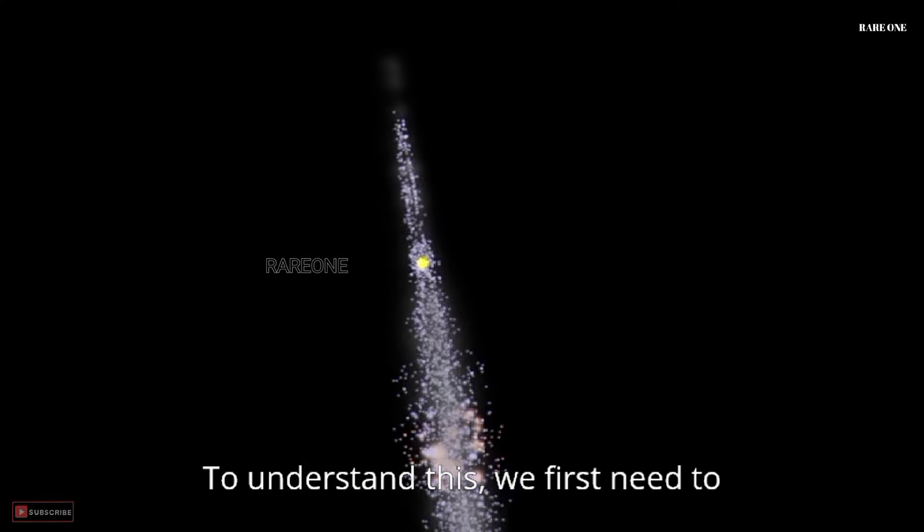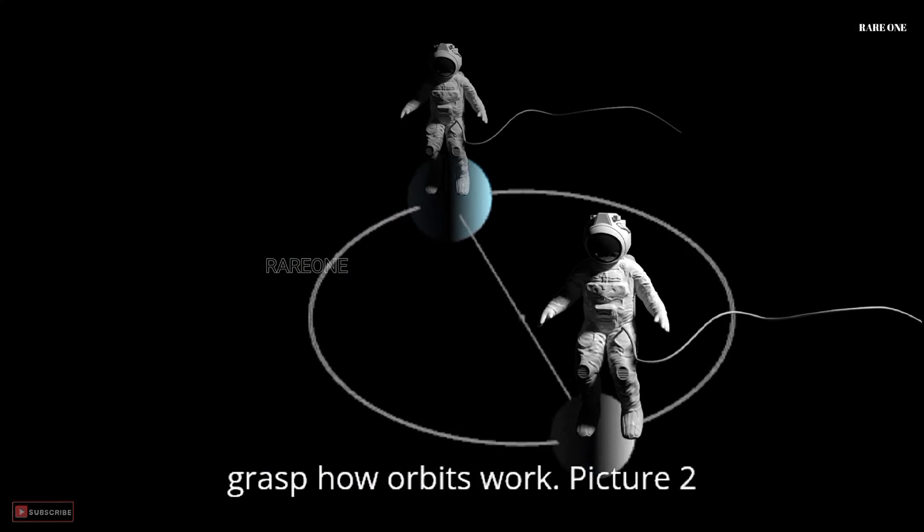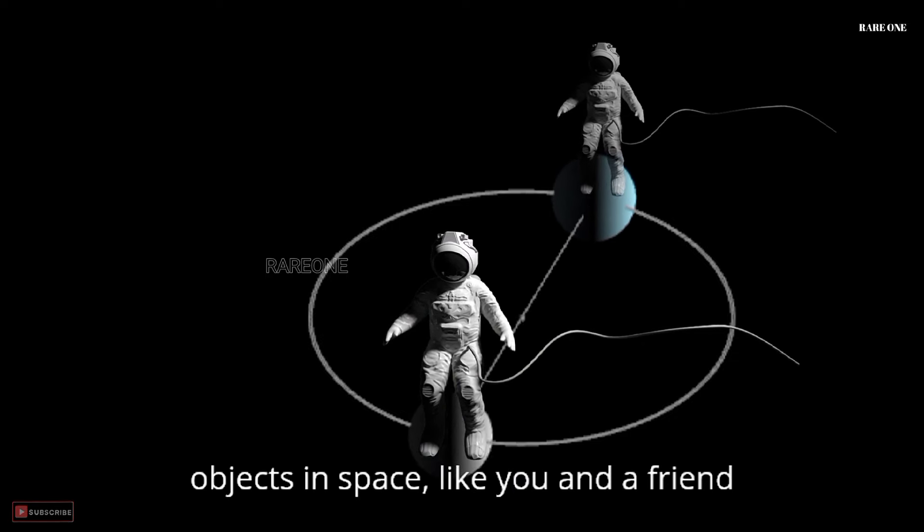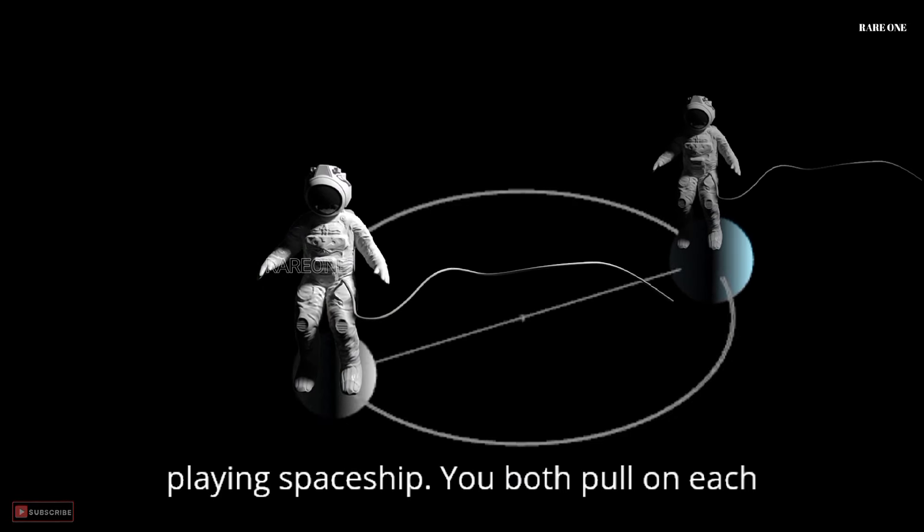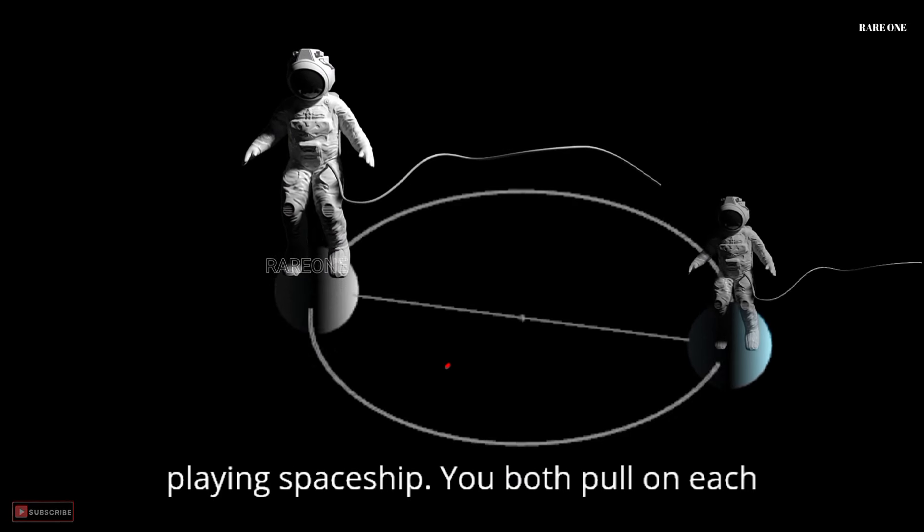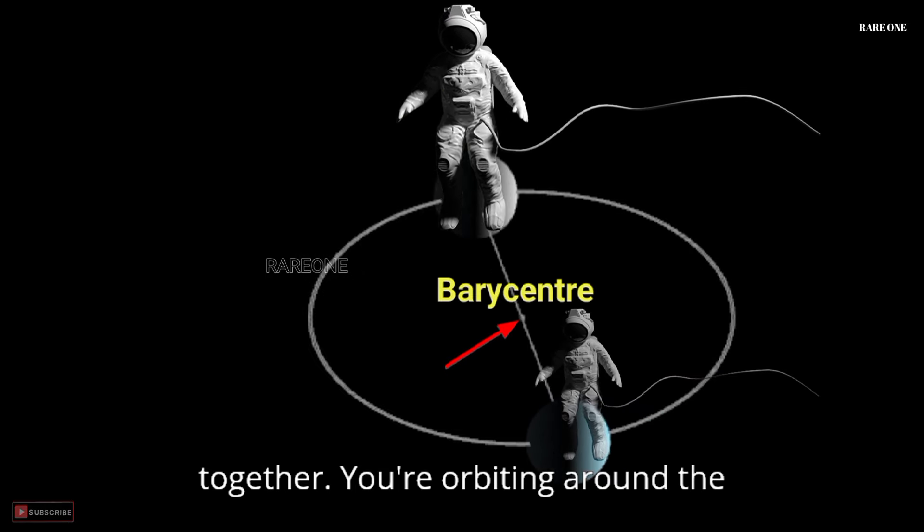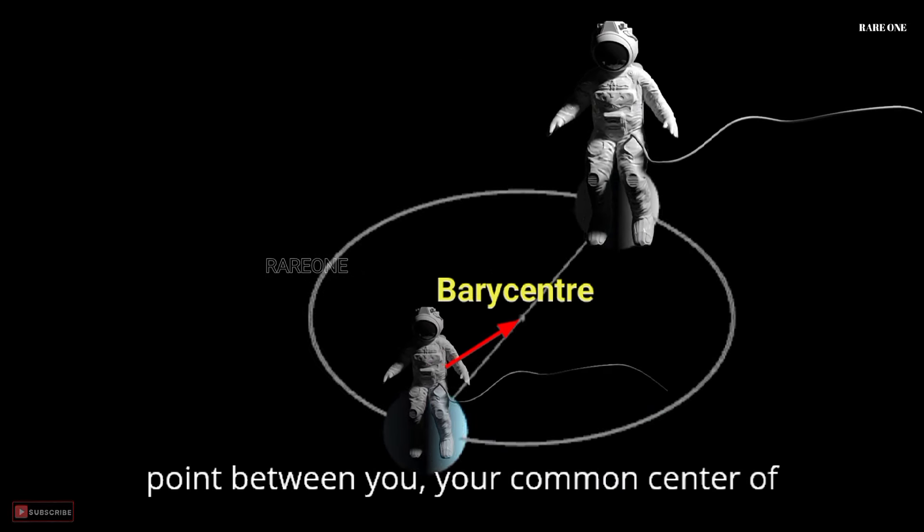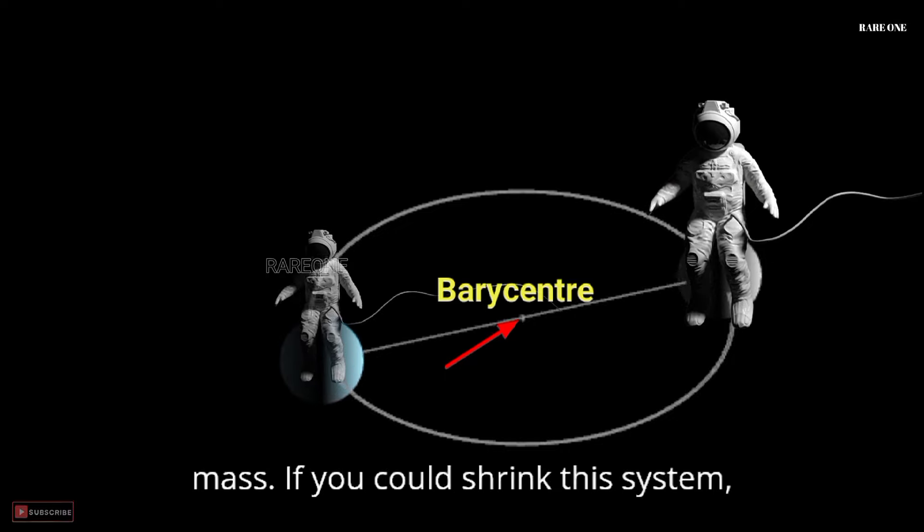To understand this, we first need to grasp how orbits work. Picture two objects in space, like you and a friend playing spaceship. You both pull on each other with gravity, keeping you bound together. You're orbiting around the point between you, your common center of mass.